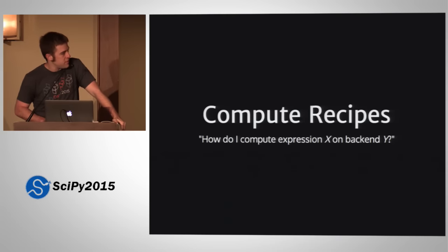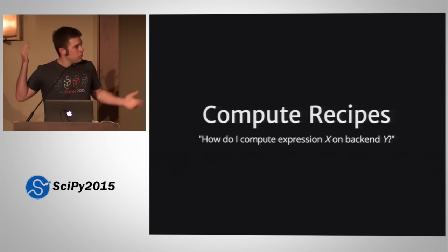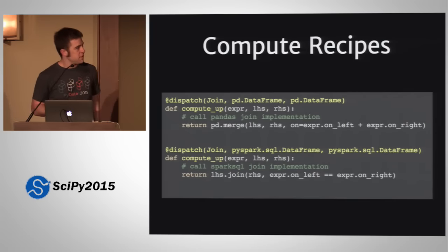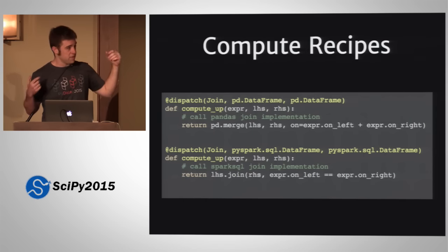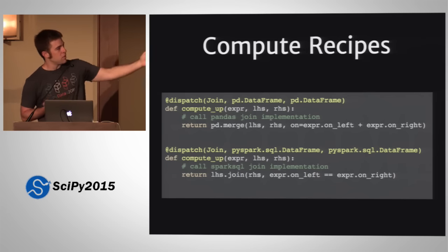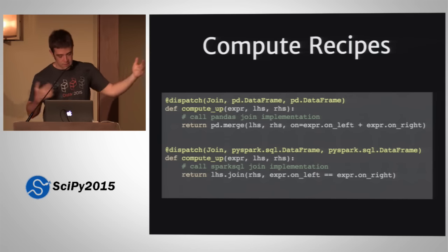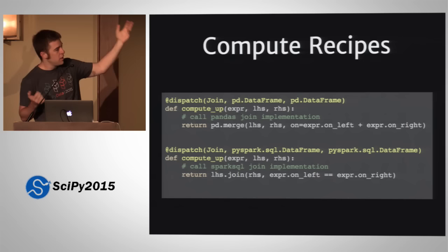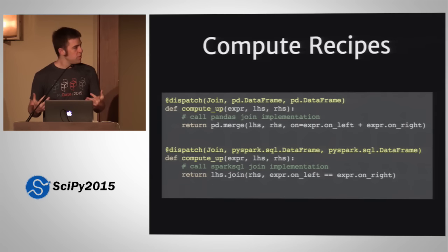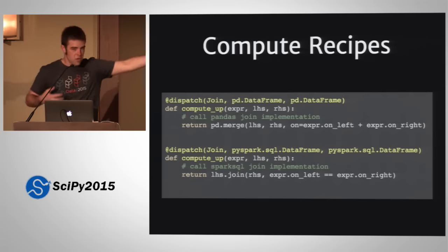There's compute, and now there are compute recipes. This says: how do I take my expression and tell, say, Spark to compute it? We write down a bunch of little compute recipes that dispatch on the type of the expression and the argument types. For example, I have two join recipes. In one case, I have two data frames I want to join — I call pandas merge. In the other case, I have a Spark data frame — Spark data frames have a join method. So Blaze knows when you call compute, it sees a join expression, sees the tables in scope are data frames, and calls the right implementation of join.